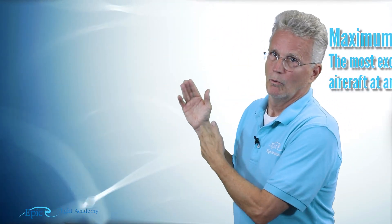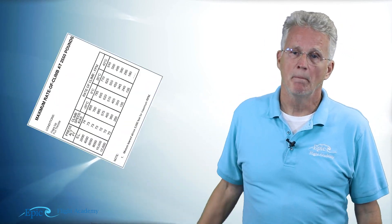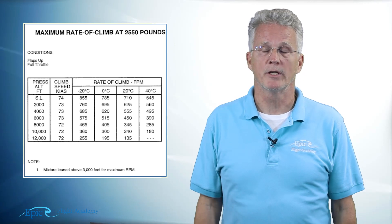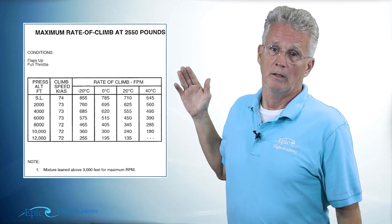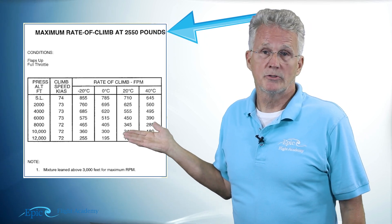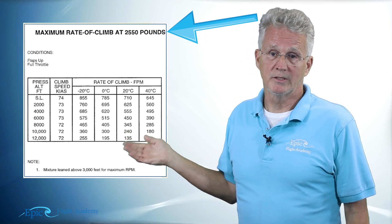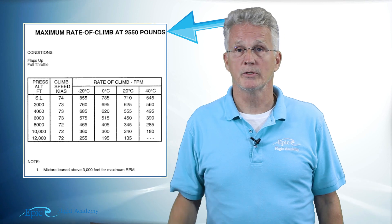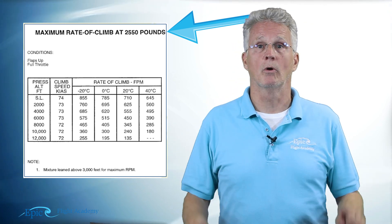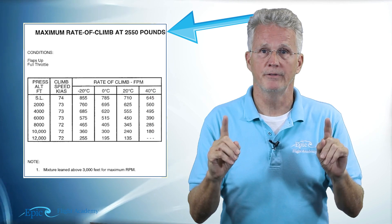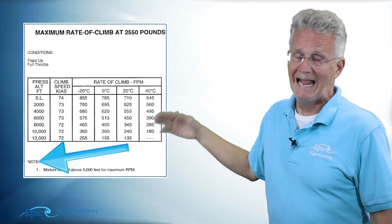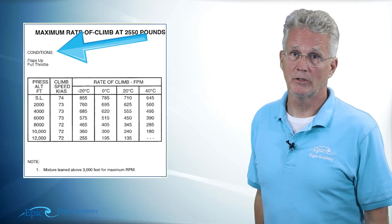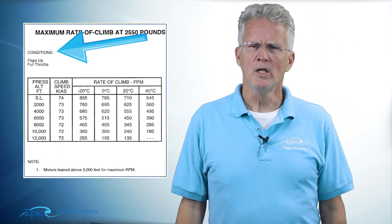Here you see a picture of that maximum rate of climb chart from your POH. I want you to notice a couple of things. First of all, this is at 2550 pounds, the maximum gross weight for the airplane. Secondly, and you recall this from other videos, when talking about performance always review both the notes at the bottom and conditions at the top.